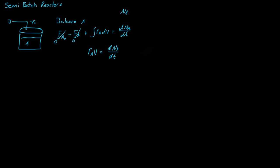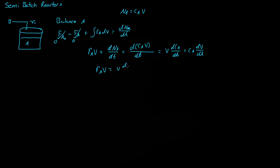If we remember that the moles of A equals the concentration of A times the volume of the system, then we get d(C_A · V)/dt. We can break this up using the product rule: the volume times dC_A/dt, plus the concentration of A times dV/dt. So R_A times V equals V·(dC_A/dt) plus C_A·(dV/dt).